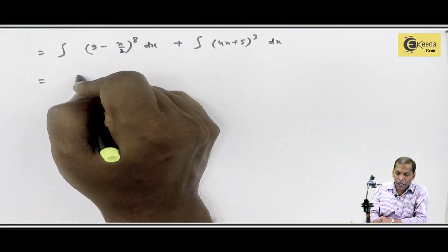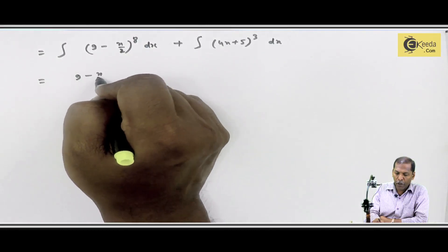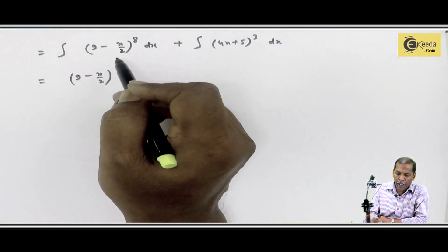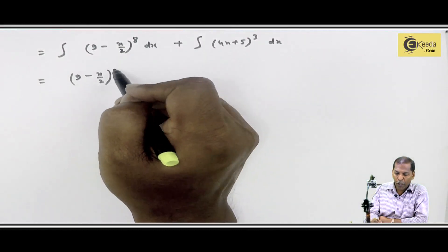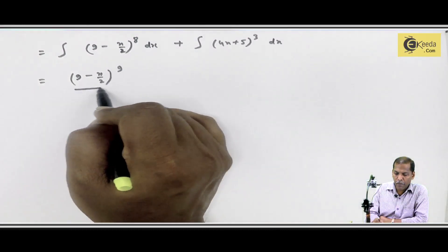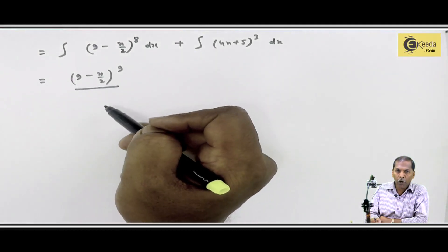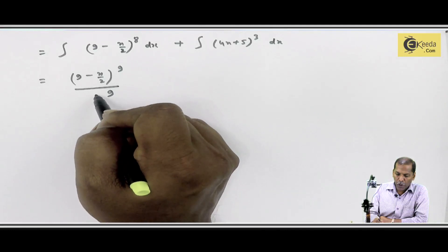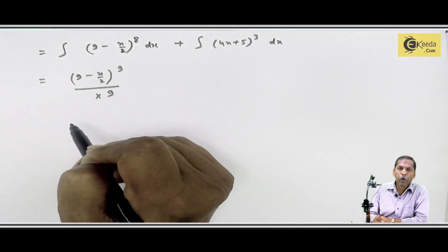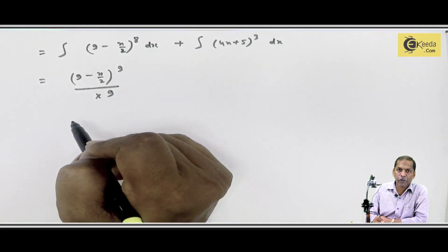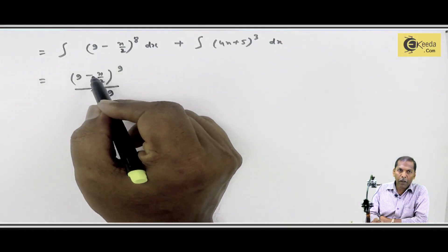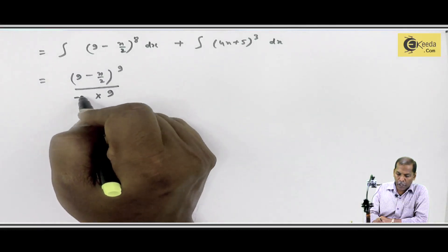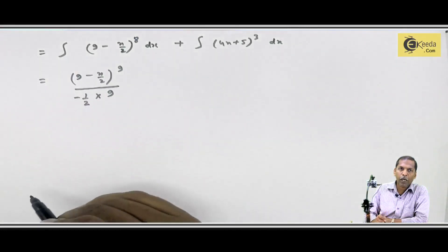So what will be the answer from power rule? 9 minus x by 2 as it is. Power has number 8, so 8 plus 1 should be 9. Same should come in denominator, so upon 9, into - now what remains here? x's coefficient. So x's coefficient here is minus 1 upon 2, so into minus 1 upon 2